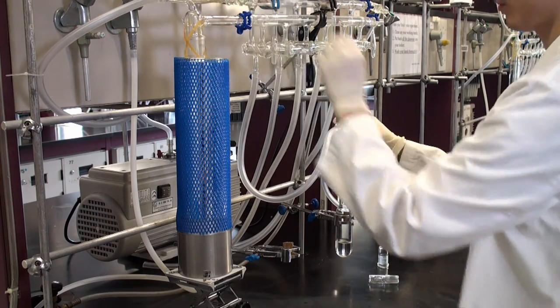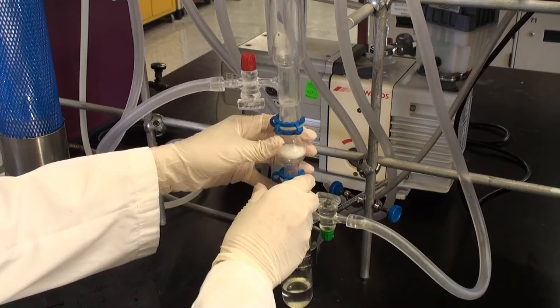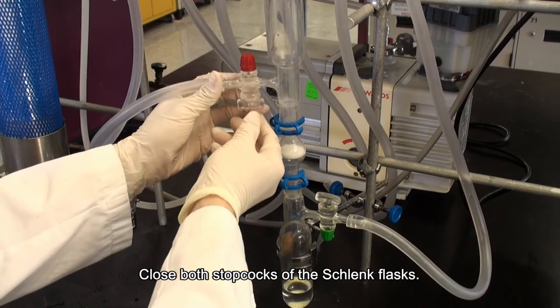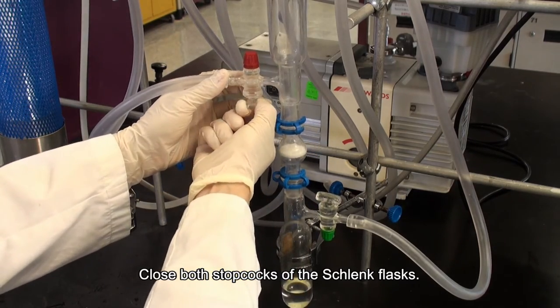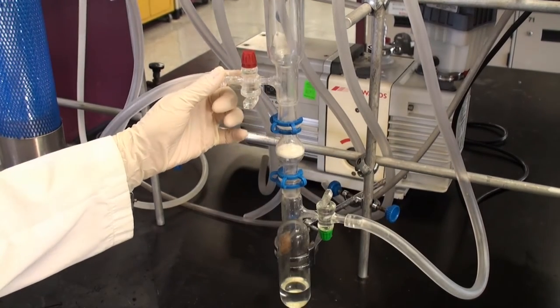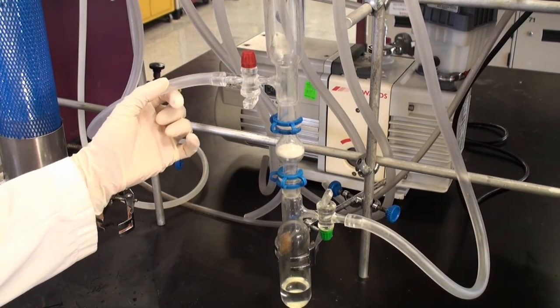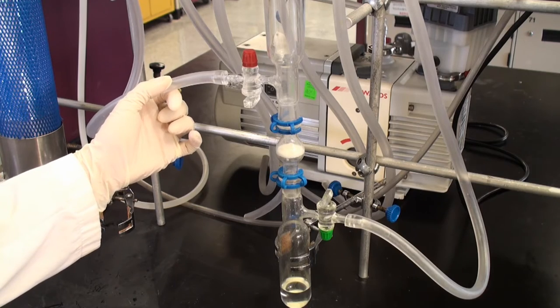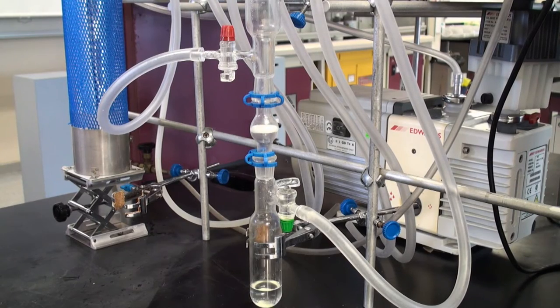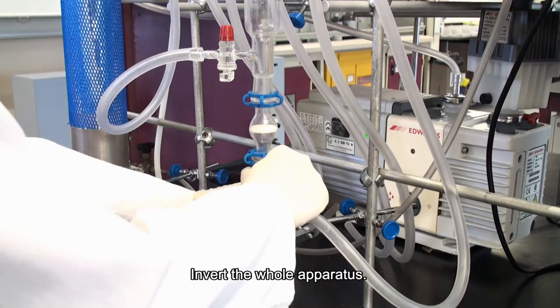Equilibrate the pressure. Close both stopcocks of the Schlenk flasks. Invert the whole apparatus.